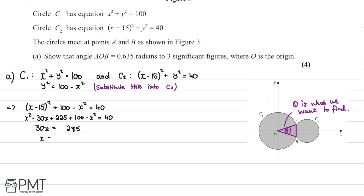Therefore x equals 285 divided by 30, which is 19 over 2, or in decimals, x equals 9.5.